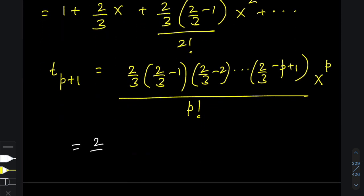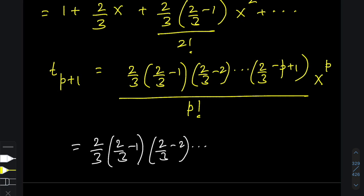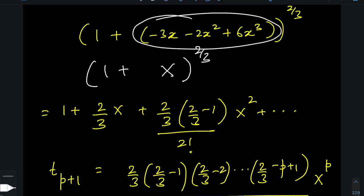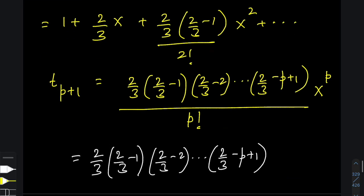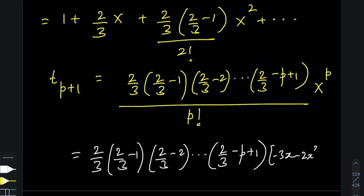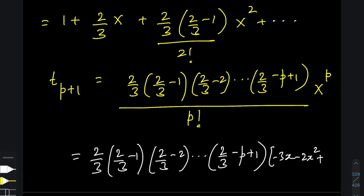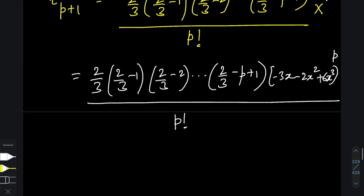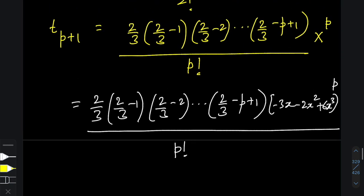Now let's put X back. So the general term becomes: (2/3)(2/3 − 1)(2/3 − 2)···(2/3 − p + 1), and the X we're referring to is the full inner expression — that's (−3x − 2x² + 6x³) — raised to the power of p, all divided by p factorial. Now, if I want the coefficient of x³ in this expansion, I'll assume that the x³ term is obtained from the (p+1)th term.